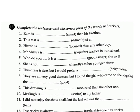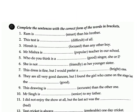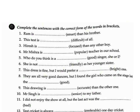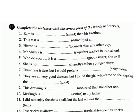Exercise B: Complete the sentences with the correct form of the words in brackets. 1. Ram is ___ smart than his brother. Answer: smarter. 2. This test is ___ difficult of all. Answer: the most difficult. 3. Hira is ___ focused than any other boy. Answer: more focused. 4. Mr. Misra is the ___ popular teacher in our school. Answer: the most popular.